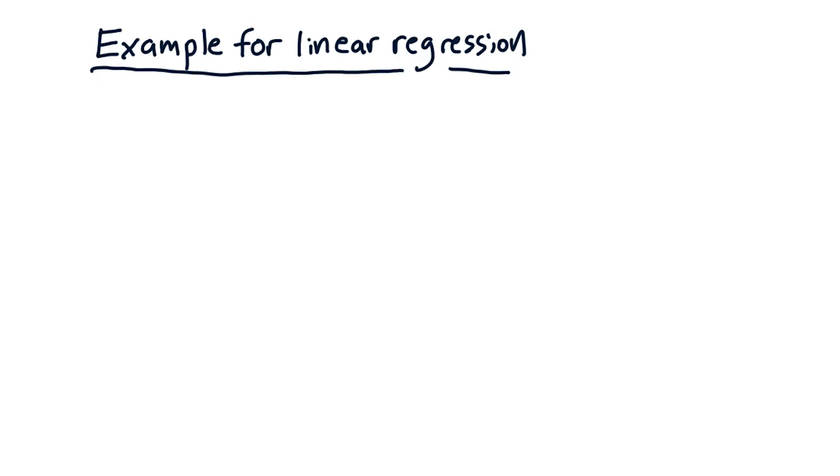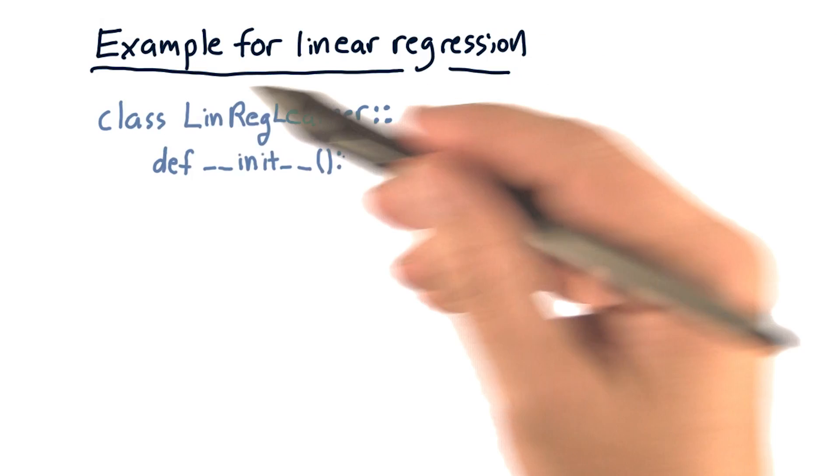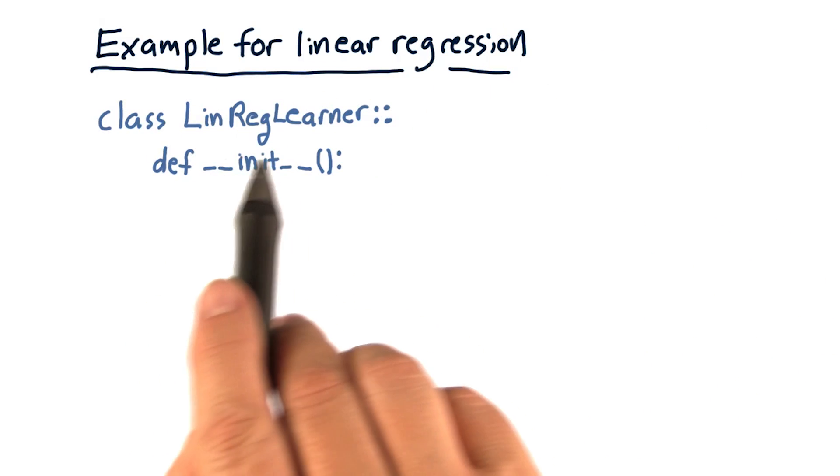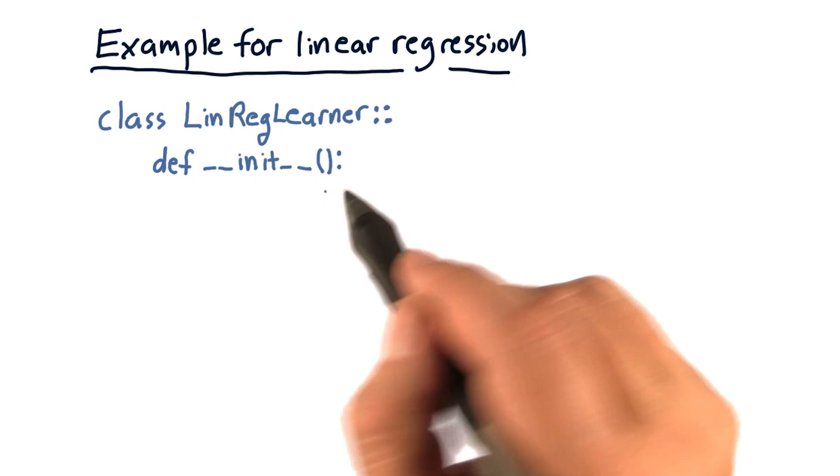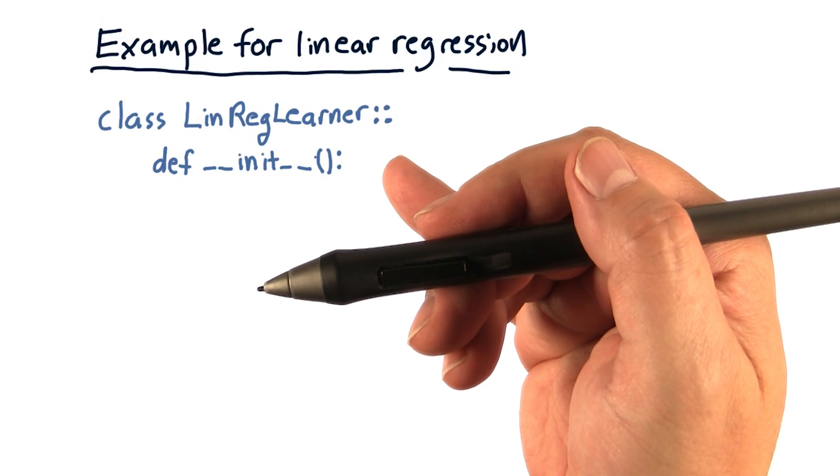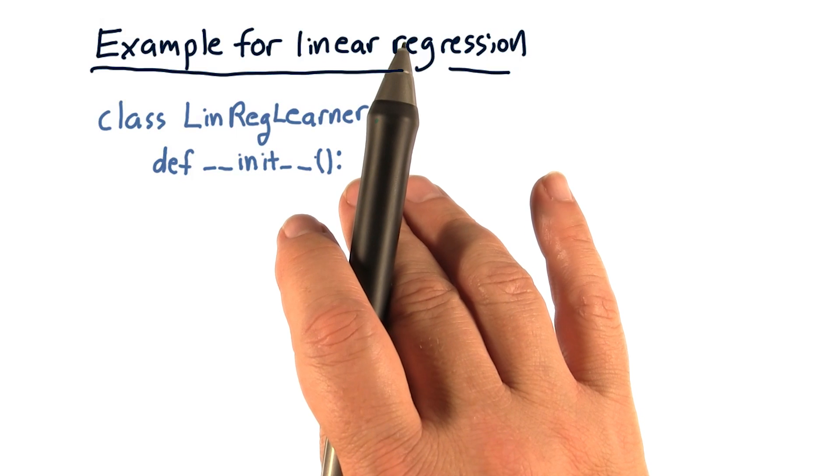Now I'm going to show you some pseudocode for how you might implement this API for a linear regression learner. So we define our class as linreg learner. And this first method, init with underscores on either side, is the constructor. The constructor is really easy.